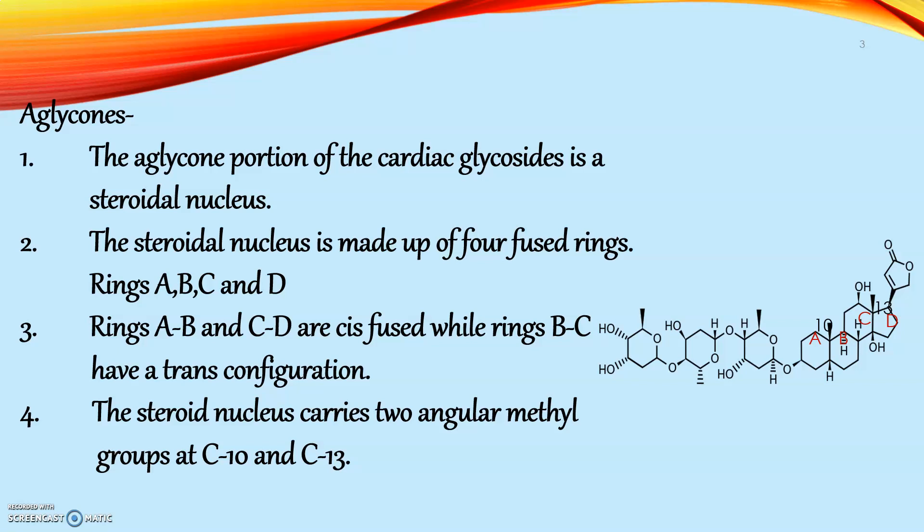Rings A, B, C, and D are cis-fused, while rings B and C have a trans configuration. When two hydrogens are oriented opposite to each other within the ring system to form a plane, this type of ring fusion is called trans. When they are directed on the same side, it is called cis.